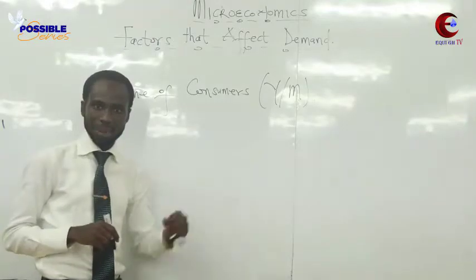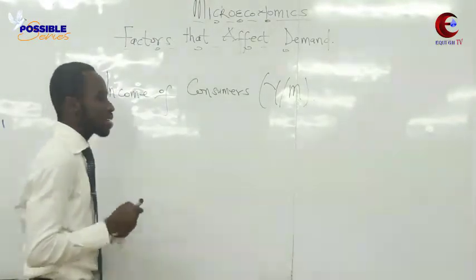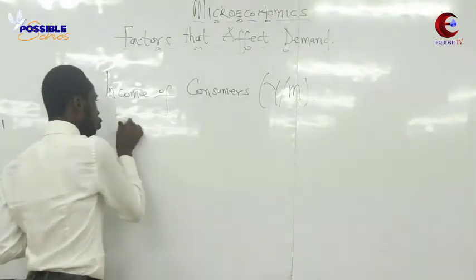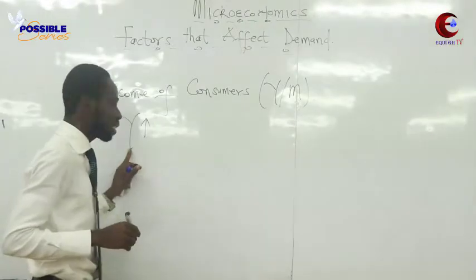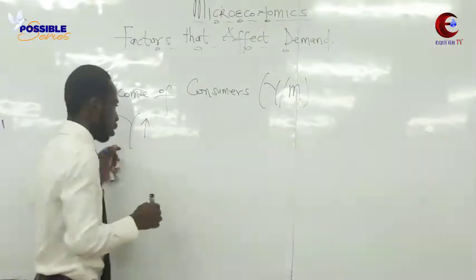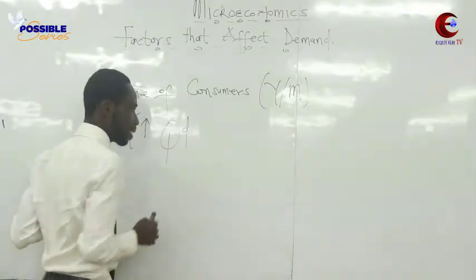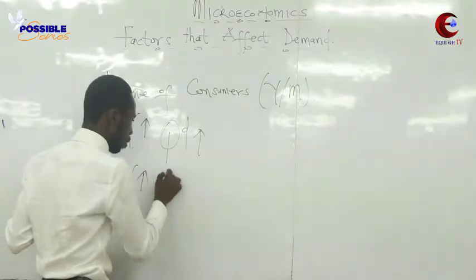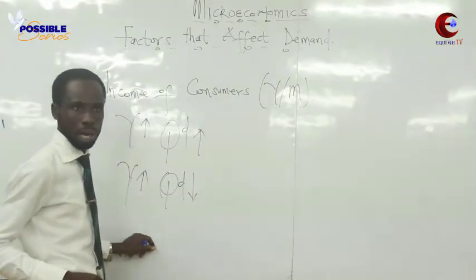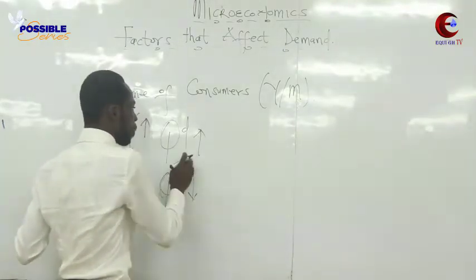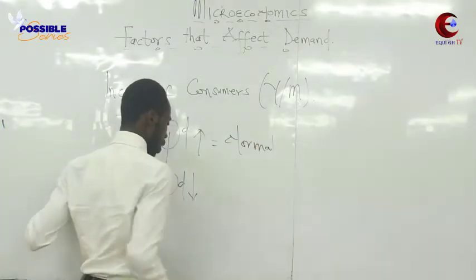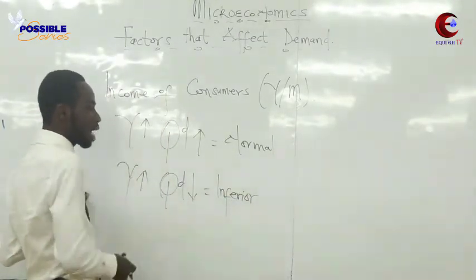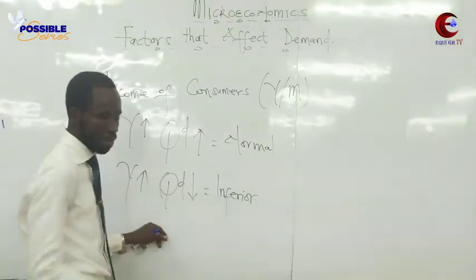We use either Y or M to represent income. Now, there are some commodities you consume more of when your income goes up, and there are some commodities that when your income goes up, you don't consume them as much. When your income goes up and you consume more, we call those normal goods. When your income goes up and you consume less, we call those inferior goods — you are looking down on that commodity.